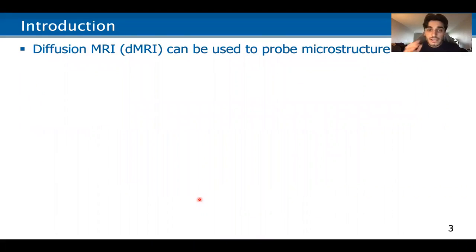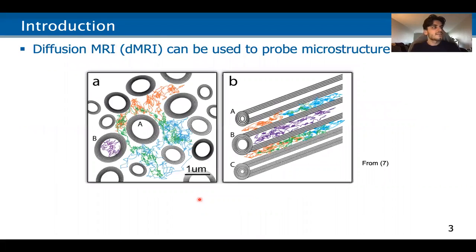Diffusion MRI can be used to probe microstructure, and it does that by sensitizing the MRI signal to the movement of water molecules, which are sensitive to their microstructural environment, as you can see here.